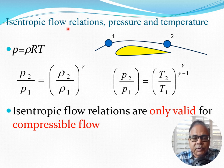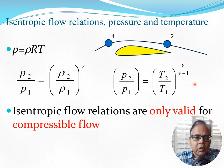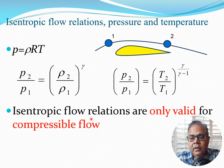Now for temperature: turning to the equation of state, valid at both points, we replace ρ with p/(RT) and plug into the pressure-density relation. This gives p2/p1 = (T2/T1)^(γ/(γ-1)). Note that γ = 1.4, so calculations generally require a scientific calculator. Importantly, isentropic flow relations are only valid for compressible flow — do not use these equations for low-speed incompressible flow.